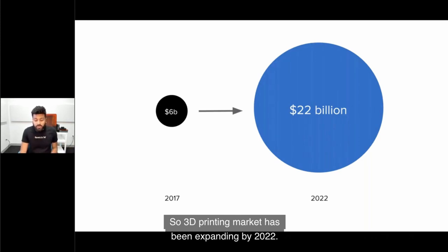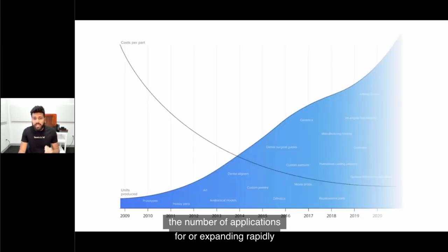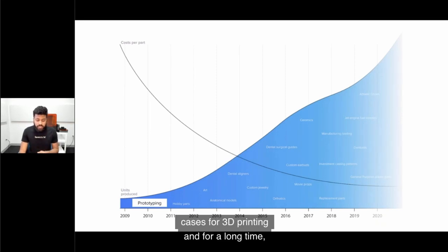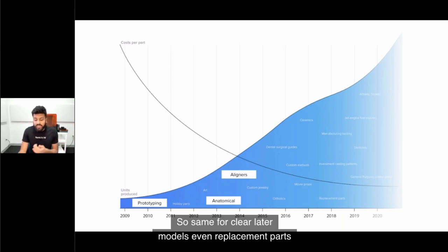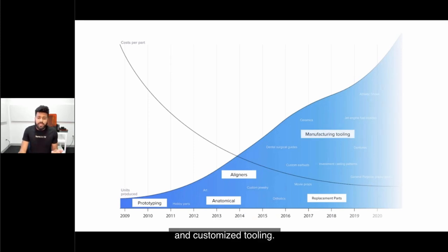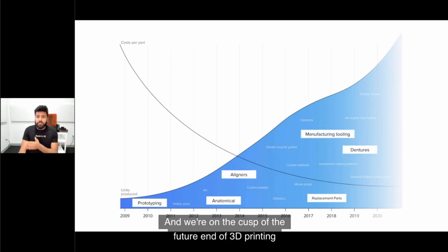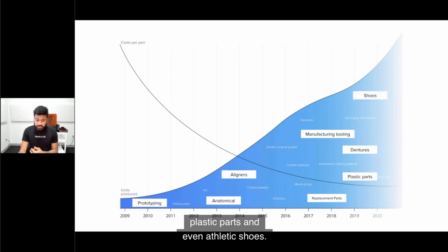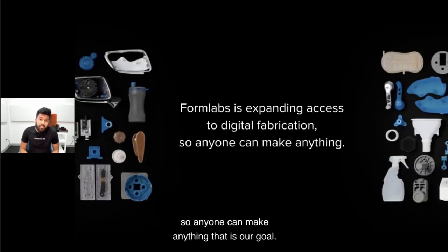The 3D printing market has been expanding. By 2022, the market will be at $22 billion in sales. Job shops, factory floors, and businesses worldwide are investing in 3D printing. The number of applications is expanding rapidly. Prototyping was one of the common use cases for a long time. But going forward, anatomical models, clear liner models, replacement parts, jigs and fixtures, and customized tooling are being 3D printed. We're on the cusp of production-level applications like 3D printed dentures and athletic shoes.